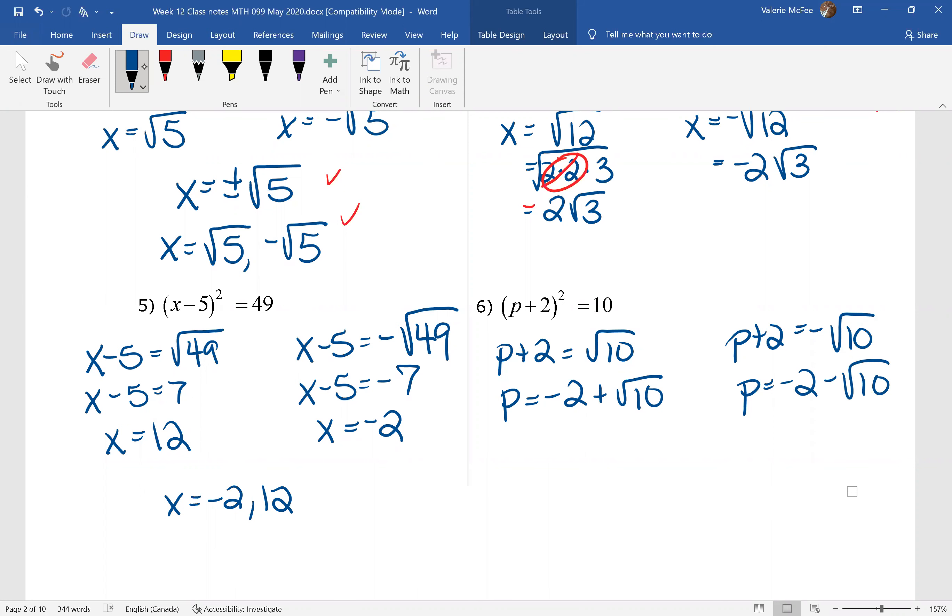I can't simplify the square root of 10 any further. And notice that even though the 2 is negative, I left it in front. For those of you familiar with the quadratic formula, you'll understand why we do that. The rest of you just know that we leave that integer in front.